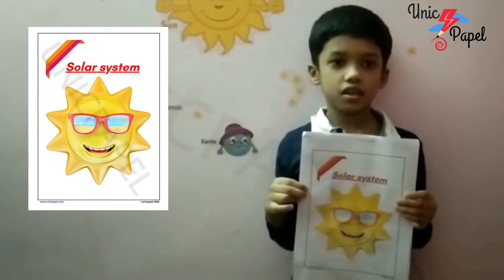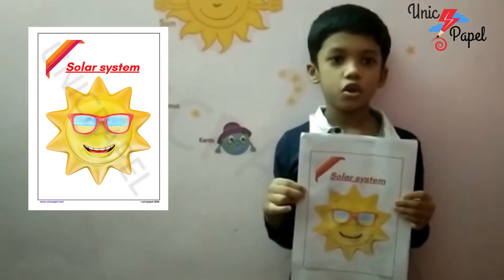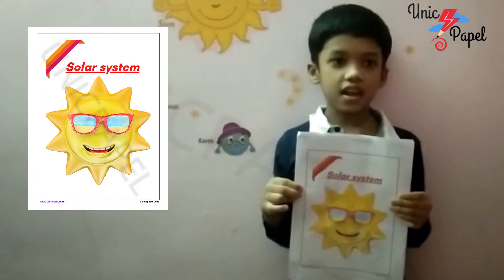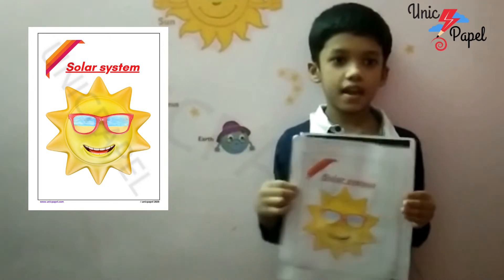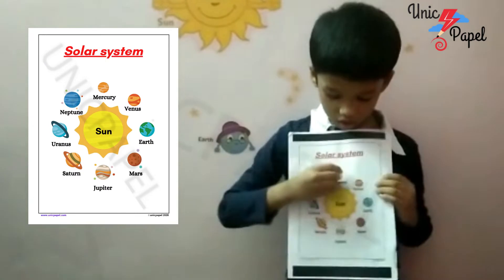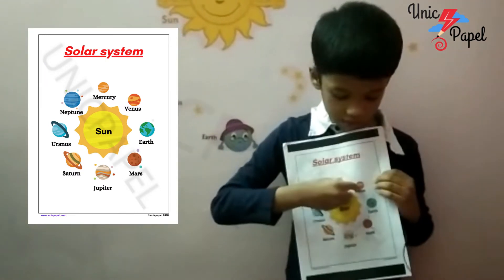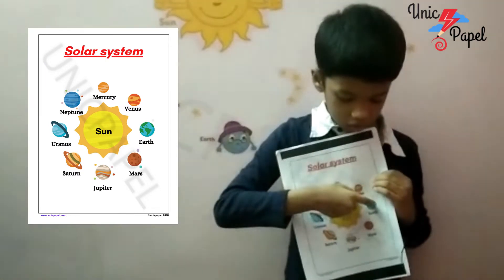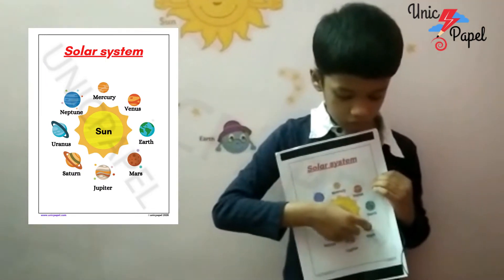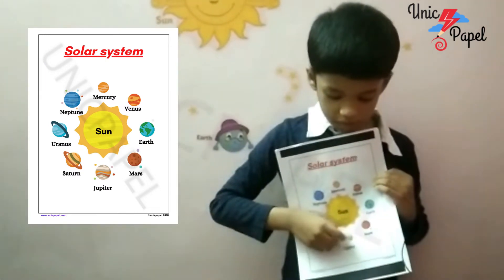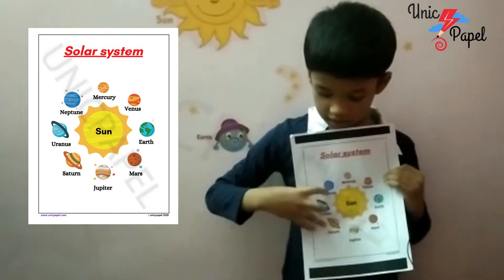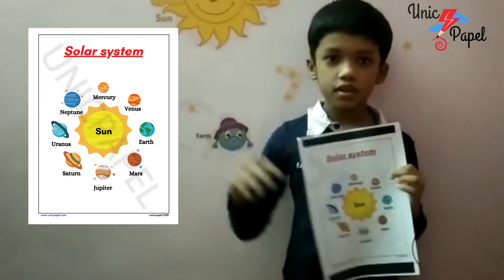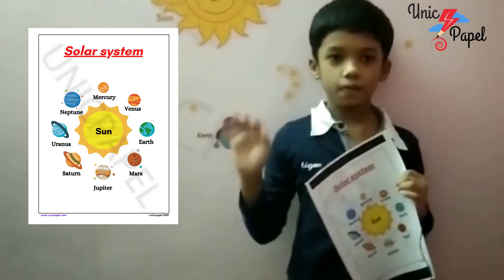The solar system is the combination of the sun and the eight planets. They are Mercury, Venus, Earth, Mars, Jupiter, Saturn, Uranus and Neptune. Bye!